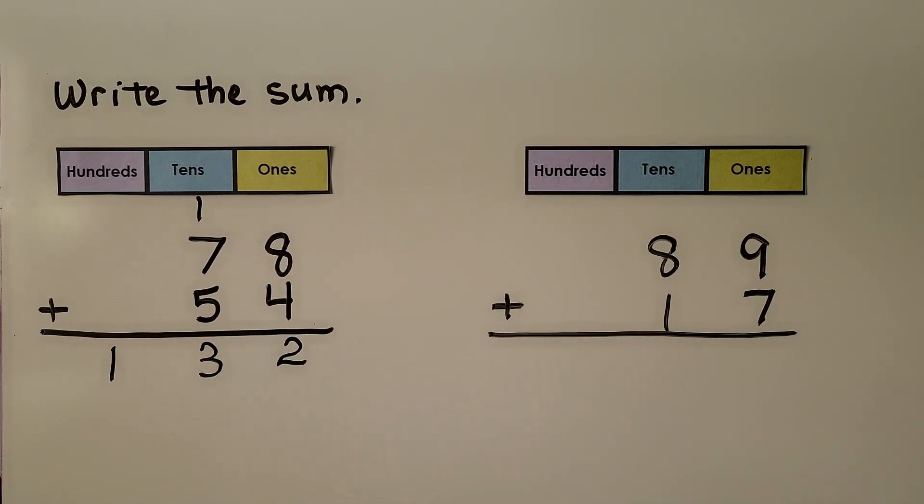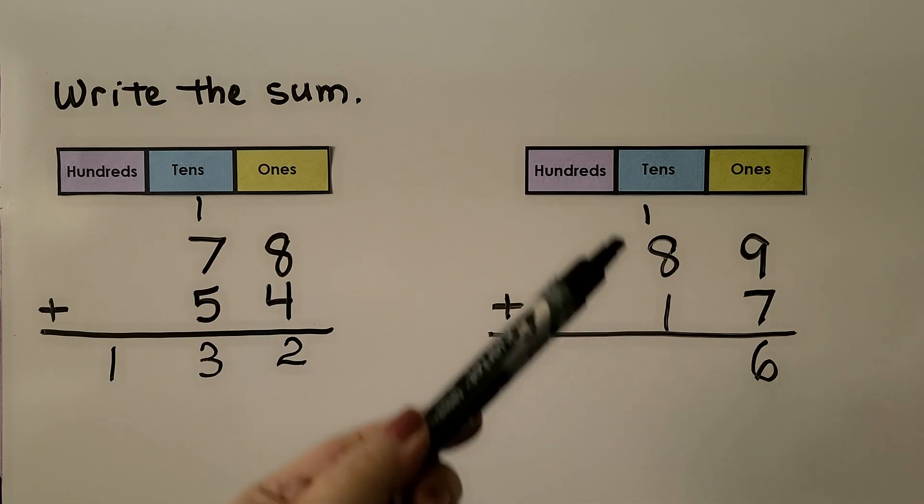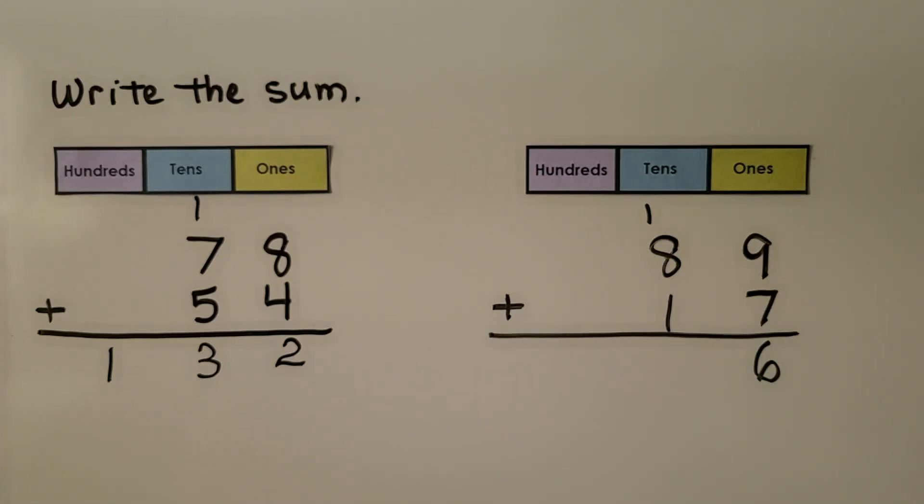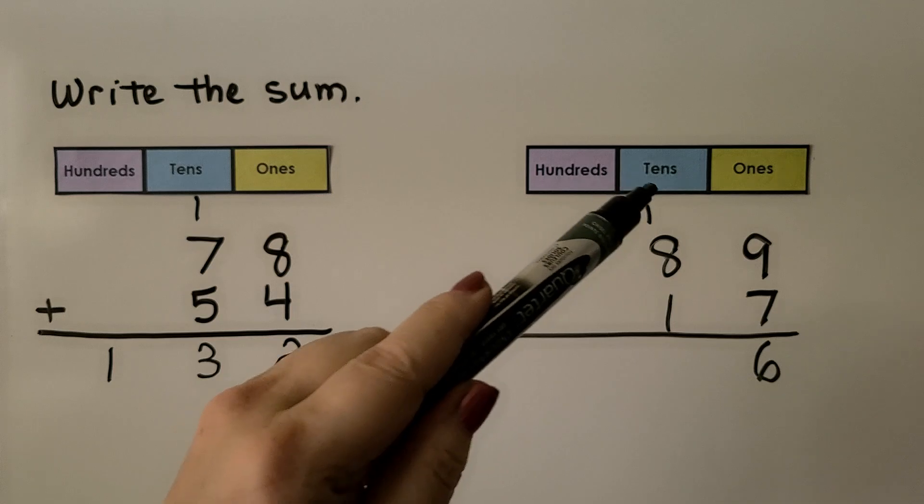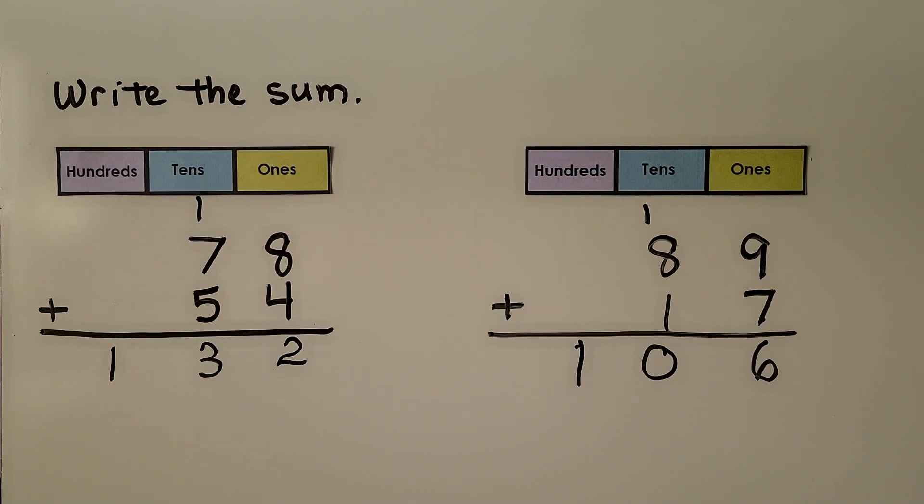Let's try this one. We have 89 + 17. We start by adding the ones place: 9 + 7 = 16. Sixteen is one ten, six ones. We regroup the one ten. Now we add the tens place: eight, nine, ten. We have ten tens. That's one hundred and zero tens. So 89 + 17 = 106.